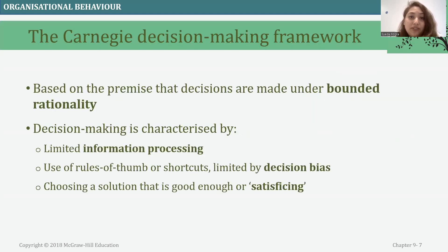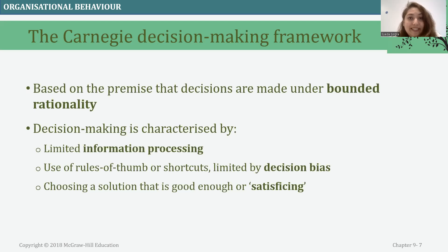Looking at the decision making framework by Carnegie, this is based on the premise that decisions are made under bounded rationality. Decision making is characterized by limited information processing, use of rules of thumb or shortcuts, which are limited by decision biasness, and choosing a solution that is good enough — that is, satisficing.